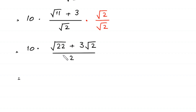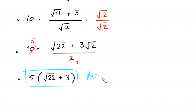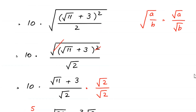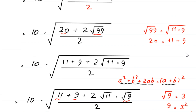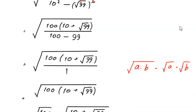Now, this 2 cancels into the 10 five times. So here we are left with 5 times (square root of 22 plus 3 times square root of 2). This is the simplest form and the final answer of this problem.